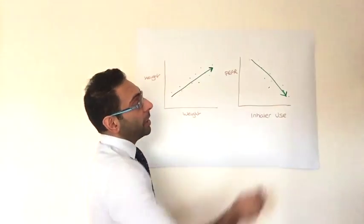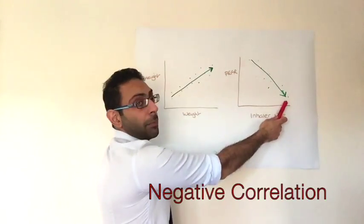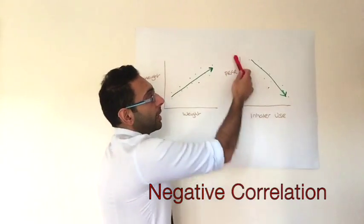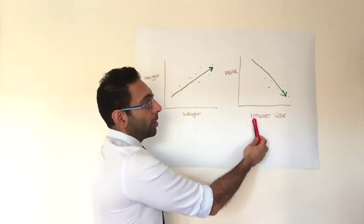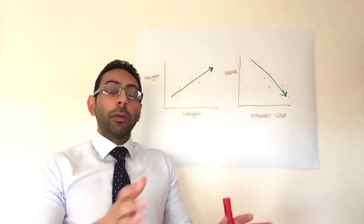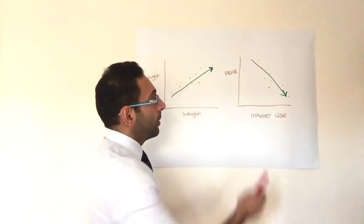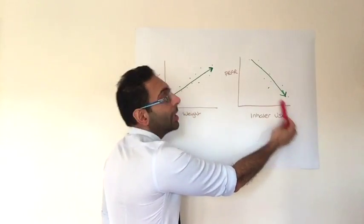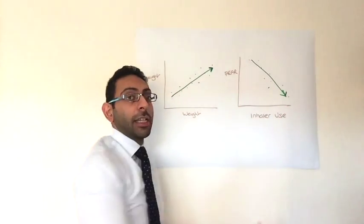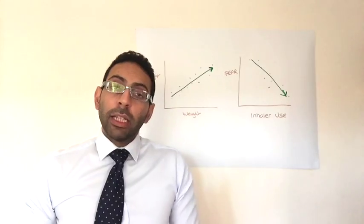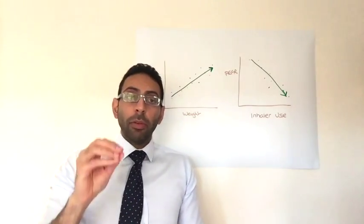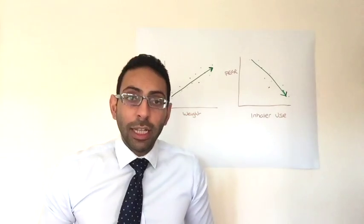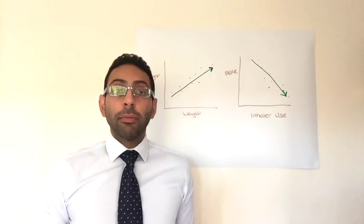Now you might get the opposite, negative correlation. Start off at the top left, end up in the bottom right. So as one gets bigger, the other gets smaller. So in this example, you've got inhaler use, so the amount of times people use a blue inhaler in asthmatics versus their peak expected flow rate. So as you expect, the more they use their blue inhaler, the lower their peak flow gets. So there's a negative correlation. So a scatter plot is simply about putting a number of different plots on an axis and looking to see what that correlation is, if there is one. Nice and simple.